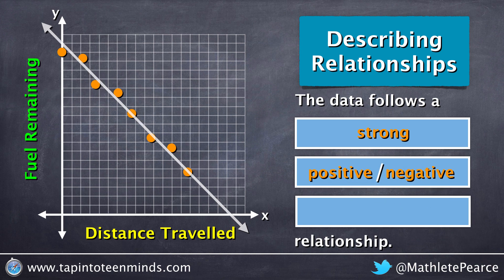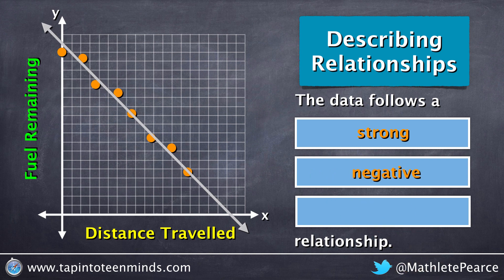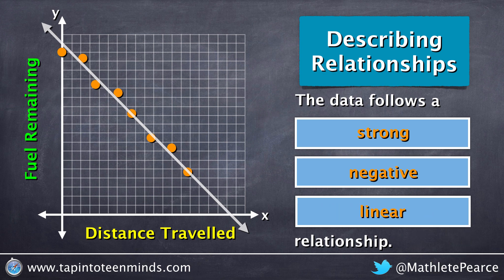The data is falling to the right, so that would be a negative trend. And the data appears to follow a line rather than a curve, so we would call that a linear relationship. So we have a strong negative linear relationship in this example.